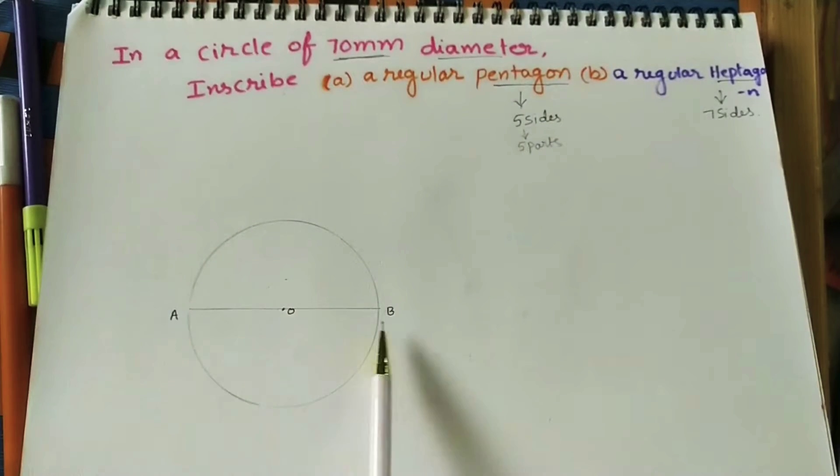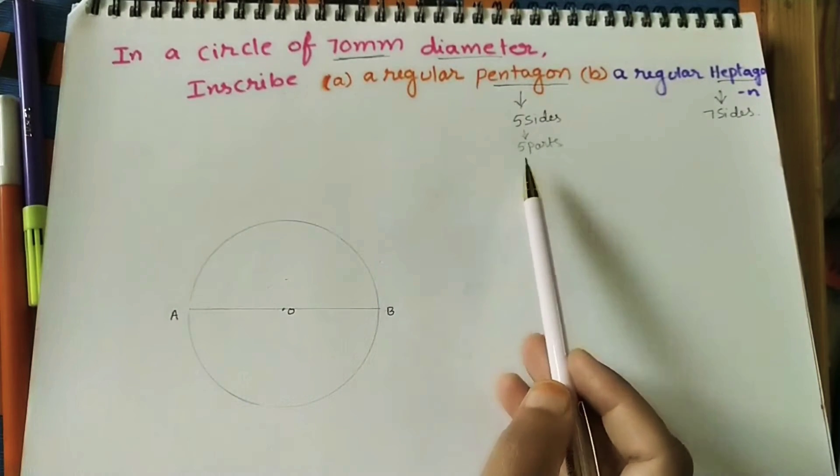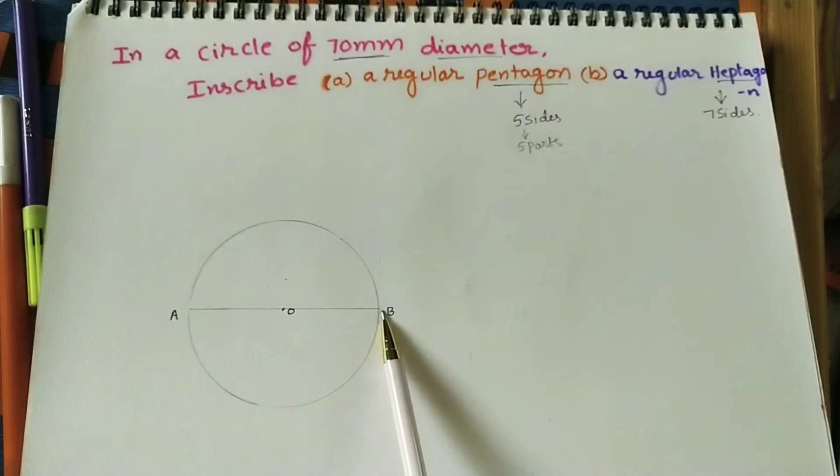For pentagon, divide this diameter into 5 parts. For hexagon, divide this diameter into 6 parts. For heptagon, divide this diameter into 7 parts.